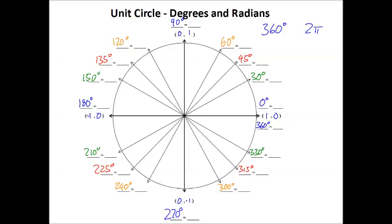These are all the measurements in degrees that you need. I wrote them in different colors to help you memorize them in groups. Always remember that you take your 360 degrees and divide it by 12 — that's the smallest unit — and keep going in steps of 30 to fill out most of the angles. The remaining ones you get by dividing 360 by 8 to get 45 degrees, and going in 45-degree steps for the remaining angles.